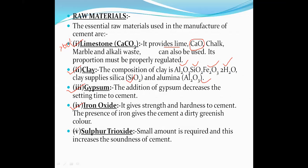The next composition is sulfur trioxide, SO3, which increases the soundness of the cement. High soundness indicates low physical strength; lower soundness indicates high physical strength. Based on soundness, we can identify whether a building material has higher or lower physical strength.